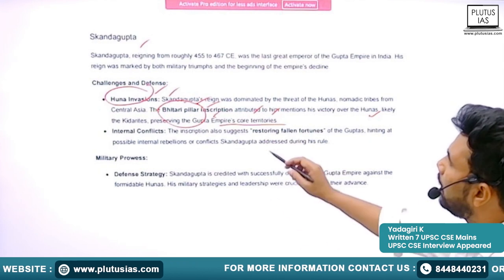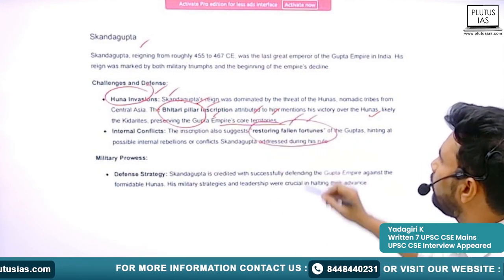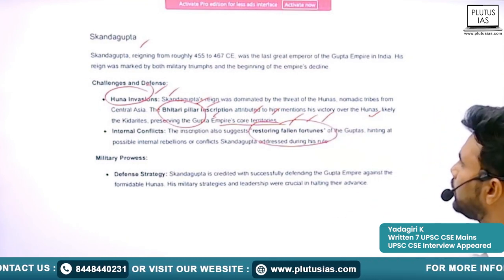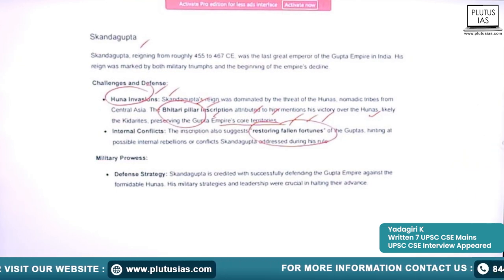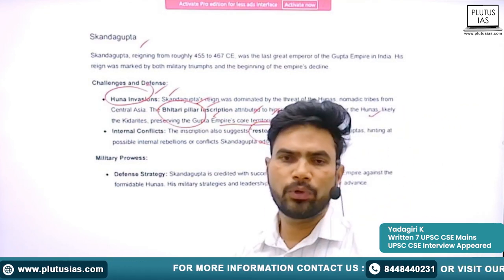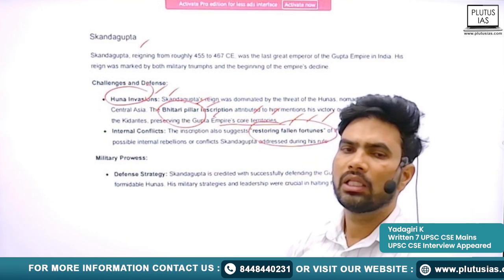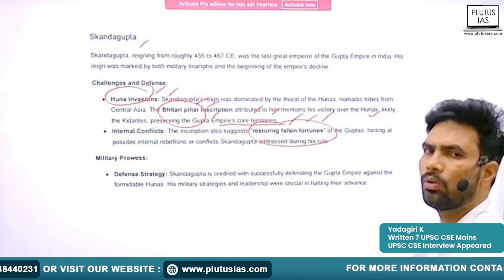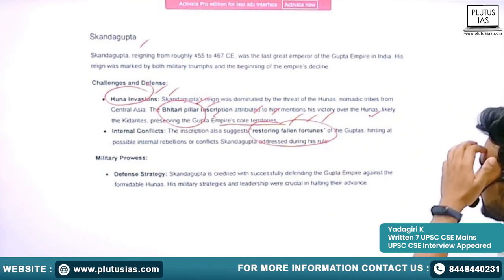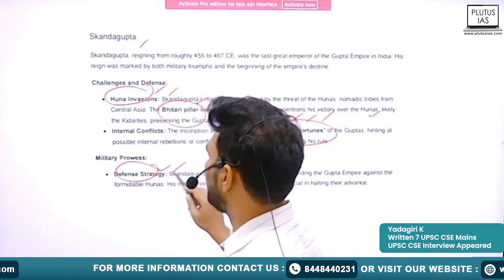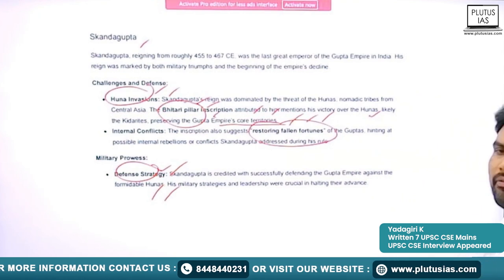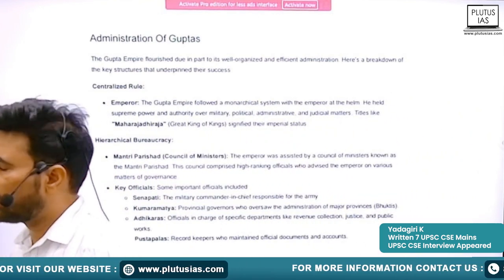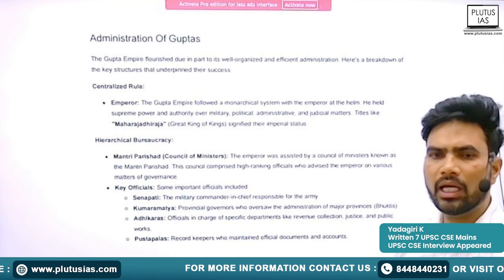The Bhitari Pillar Inscription also suggests there were internal conflicts before Skandagupta, but he was able to restore the fallen fortunes of the Gupta Empire. He is known for his defense strategy against the Hunas. These are the series of great rulers in the Gupta dynasty. Now we will understand the administration of the Guptans.